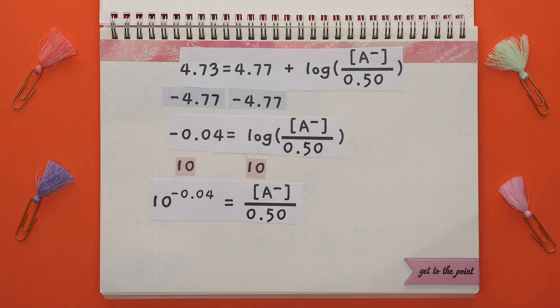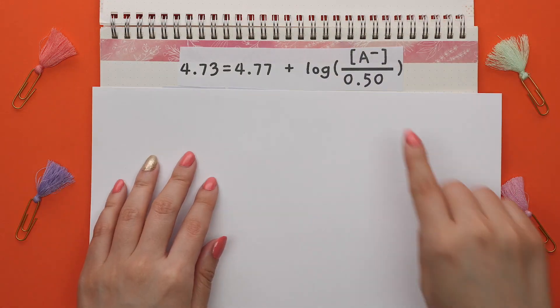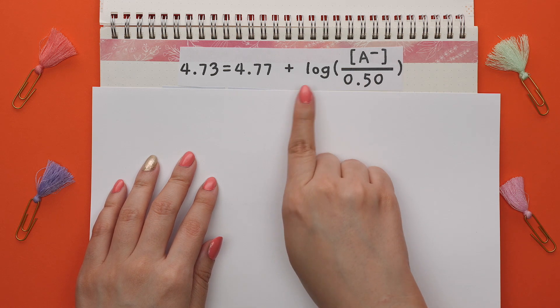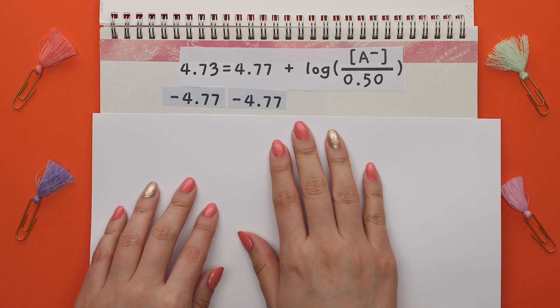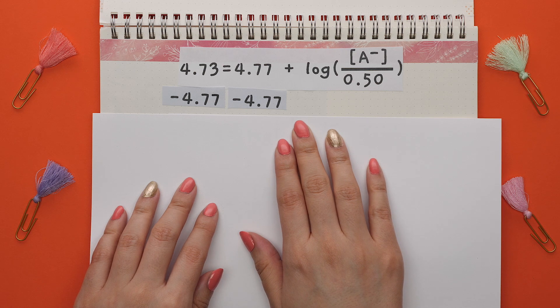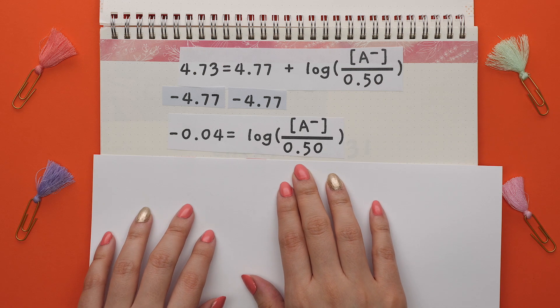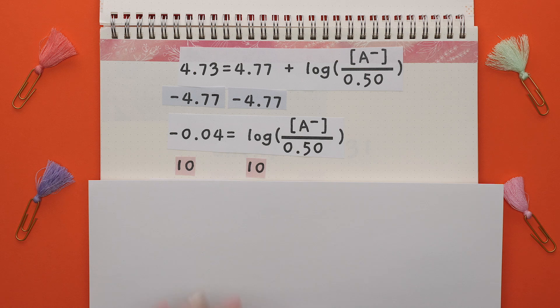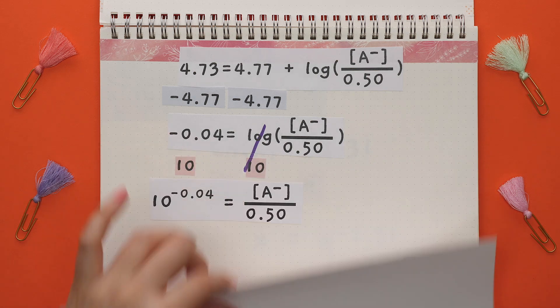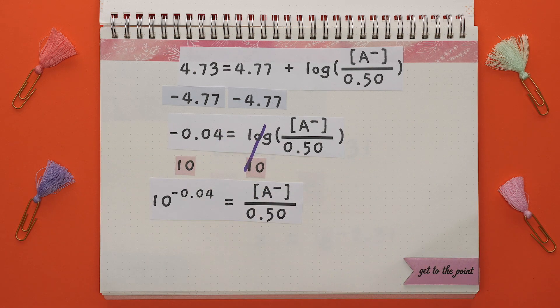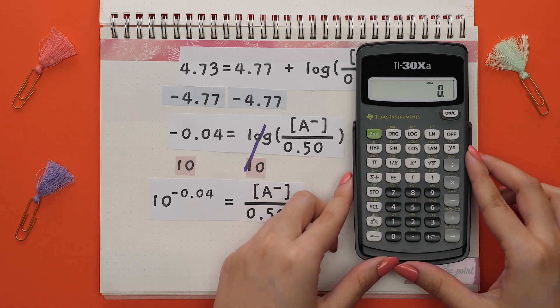Here's another example. We will solve for this unknown variable. Start with getting the log by itself by subtracting both sides by 4.77. Now that the log is isolated, we can take the anti-log of both sides. The logs cancel out and this fraction comes down while this now becomes an exponent.